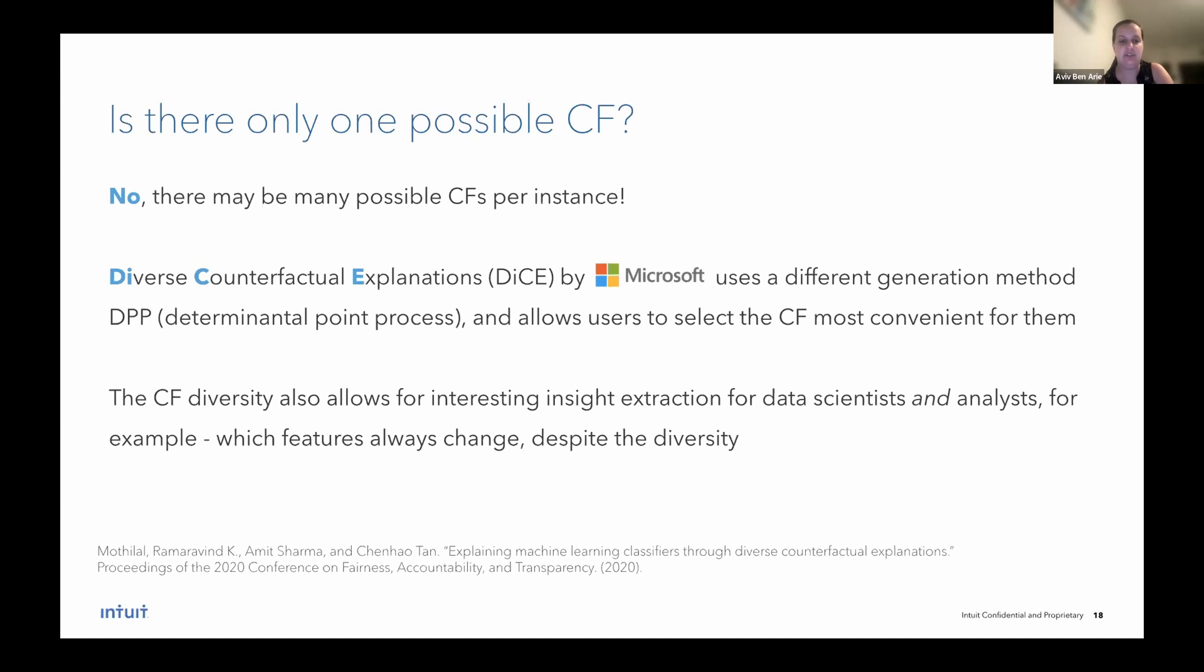This counterfactual diversity also allows for interesting insight extraction for data scientists and analysts. One example is to check which features always tend to change despite the diversity, right? If we generate 10 counterfactuals for an instance, and we notice that there's one single feature that always needs to change or never changes, this means a lot on the importance and the behavior of that feature. We can also check which features always tend to change together and so on.